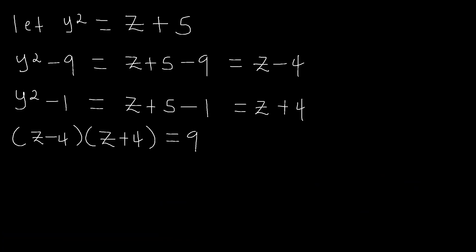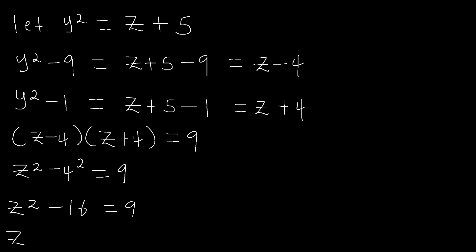And once again, from the difference of two squares, this will become z squared minus 4 squared equaling to 9, which gives us z squared minus 16 equaling to 9. And therefore, z squared will be equal to 9 plus 16, which is equal to 25.